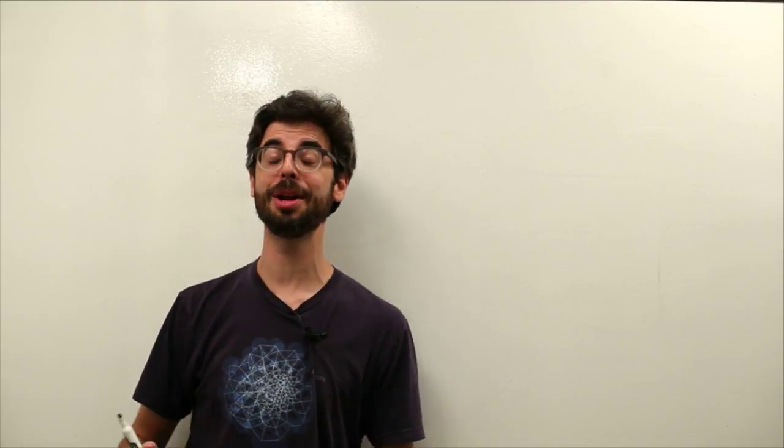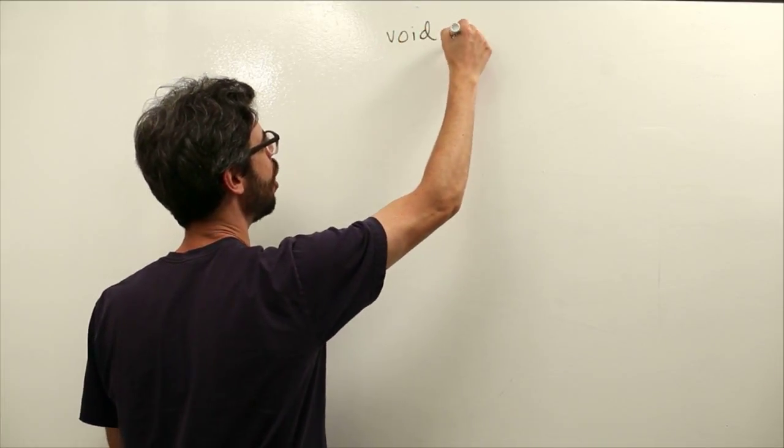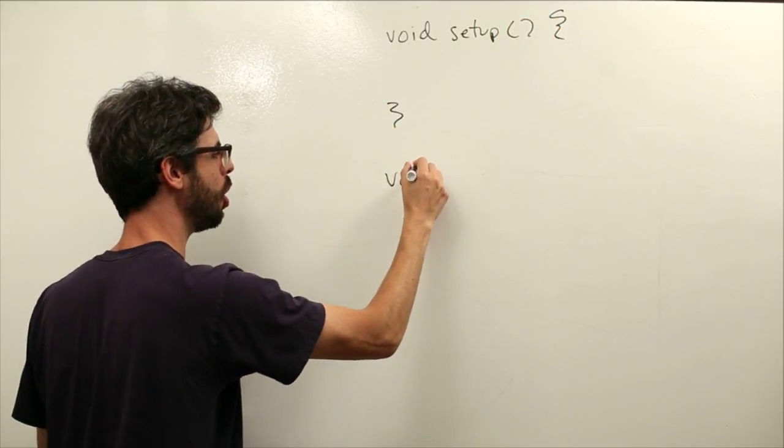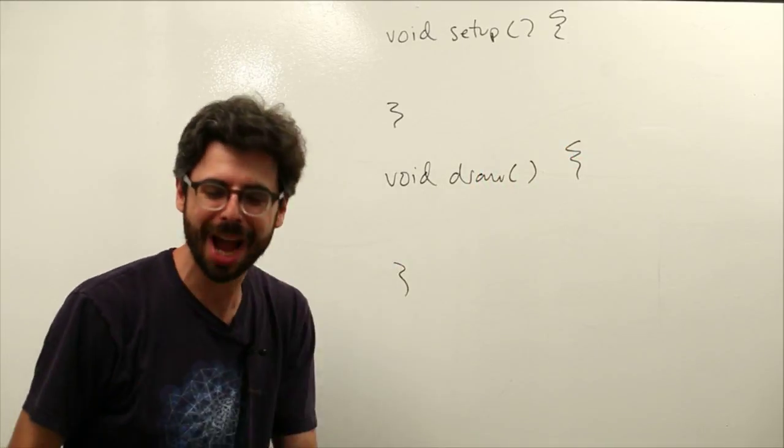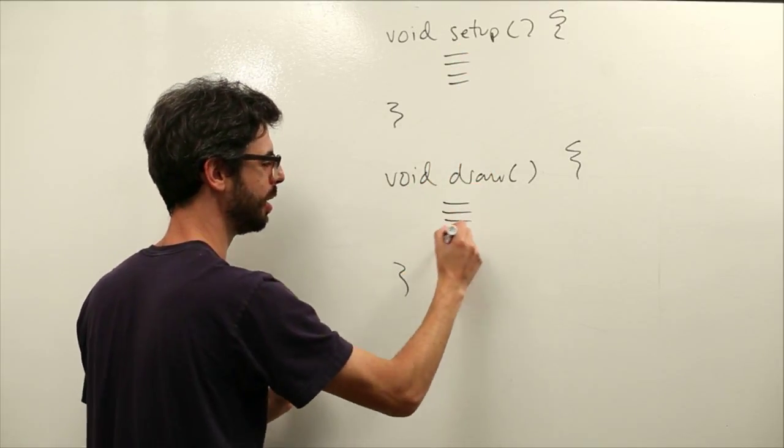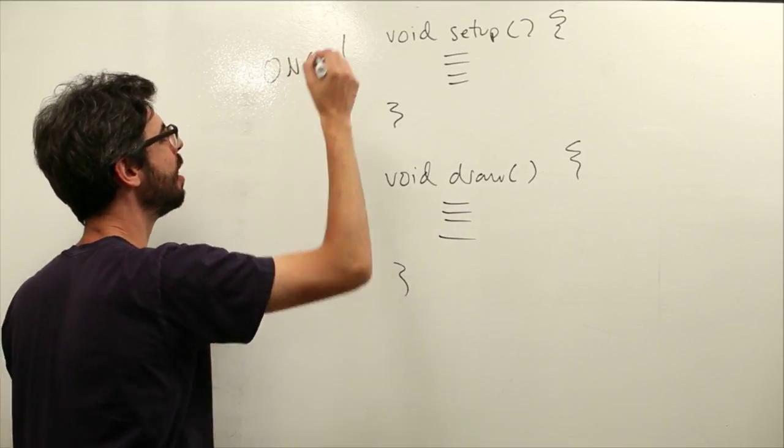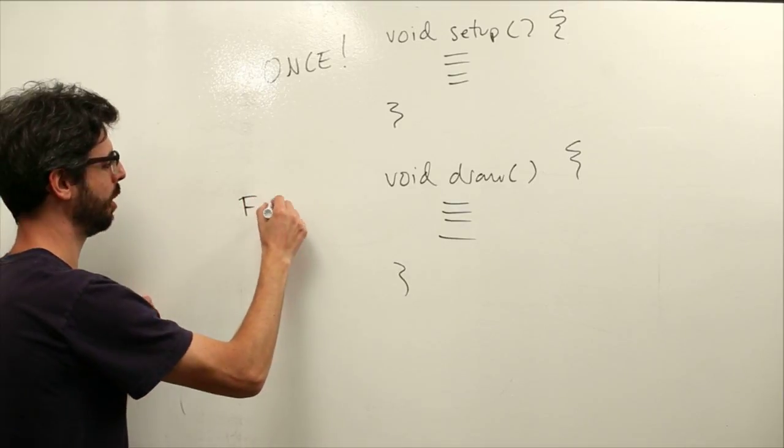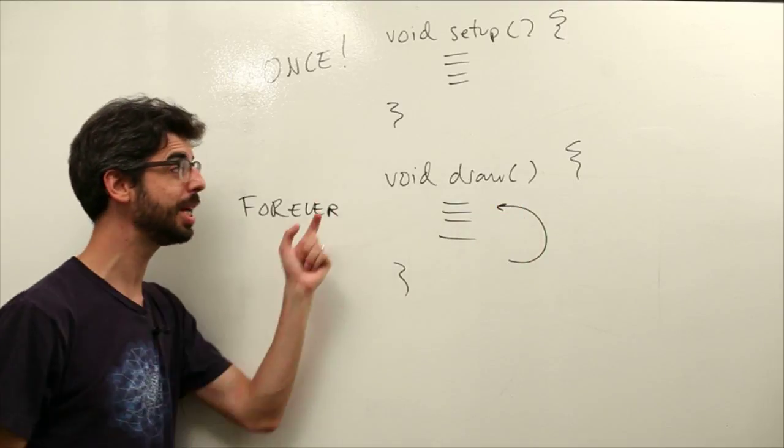Let's consider what we've established so far in terms of the flow of a program. We know we have two new blocks of code that we've established. One is called setup, and one is called draw. We write code inside both of these blocks, between the curly brackets. The code in setup happens once and only once, first at the beginning. And the code in draw happens forever. It loops over and over again. Whenever it gets to the end, it loops right back at the beginning.